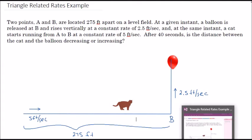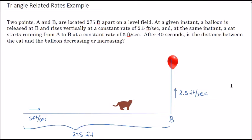In 40 seconds, the cat covers 5 feet every second, so the cat has moved 200 feet, which means this distance is now just 75 feet. The balloon started on the ground, and in 40 seconds at 2.5 feet per second, it will have covered 100 feet.